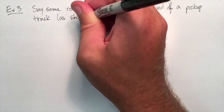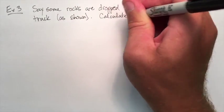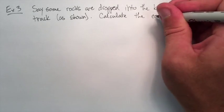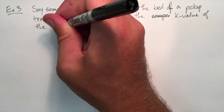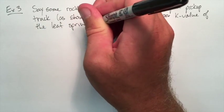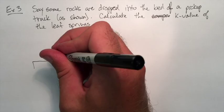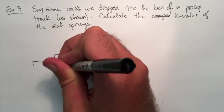So when the rocks are dropped they're going to hit the back of the pickup truck and it's going to compress the springs over top of the wheels. We're going to try and calculate the K value of those springs.